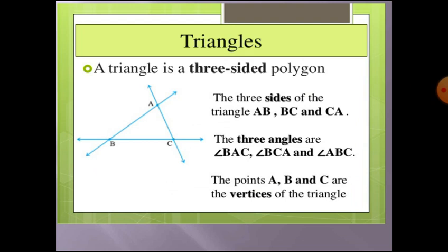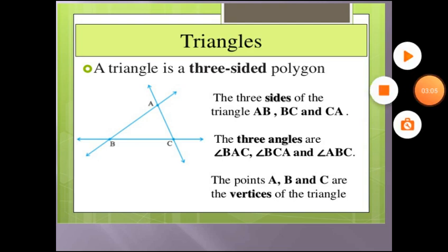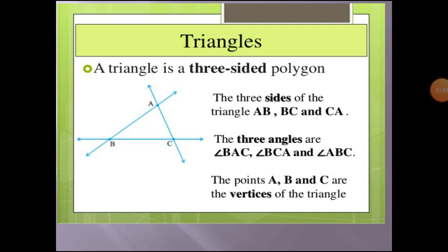Next, triangles. A triangle consists of three sides — it is a three-sided polygon. See this figure, triangle ABC. The three sides of this triangle are AB, BC, and CA.